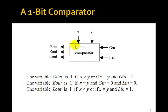e out is going to be 1 if x is equal to y, either they're both 0 or both 1, and g in and l in are both 0.